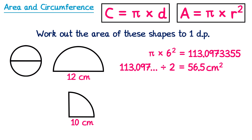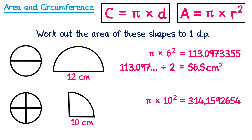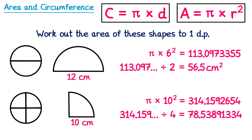For the quarter circle, we do the same idea — pretend it's a full circle. Area equals pi times the radius squared, times 10 squared, giving this number. But it's a quarter circle, and we'd need four of these to make a full circle. So we divide the area by 4, which rounds to 78.5. To find the area of a semicircle or quarter circle, find the area of the full circle and divide it by 2 or by 4.